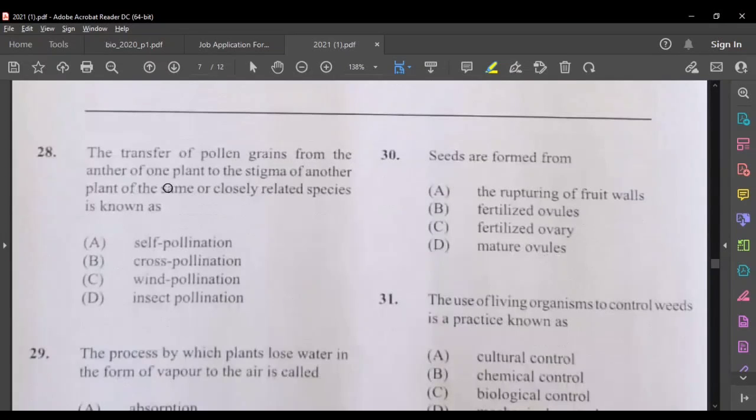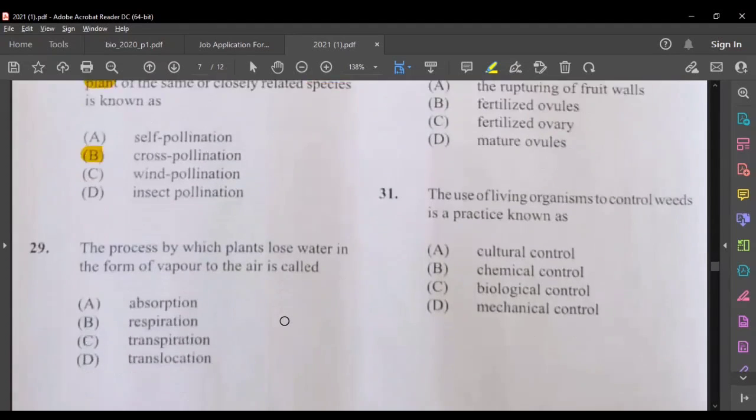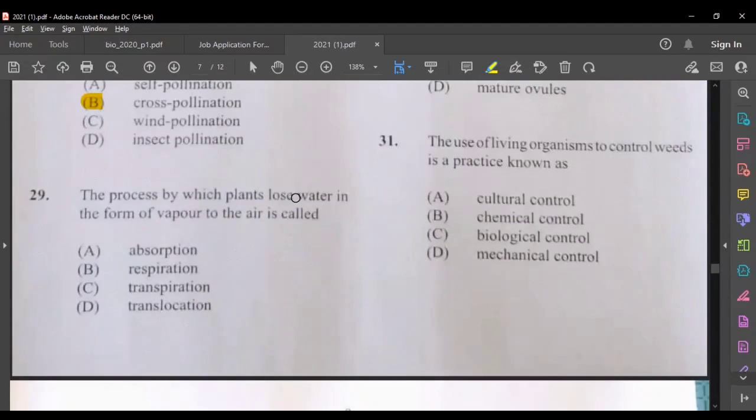Question 28, the transfer of pollen grains from the anther of one plant to the stigma of another plant of the same or closely related species is known as, the main point to note is that it happens on another plant, so it is cross-pollination. The process by which plants lose water in the form of vapor in the air, that's called transpiration.